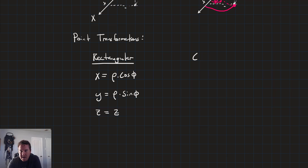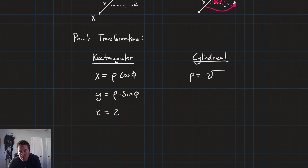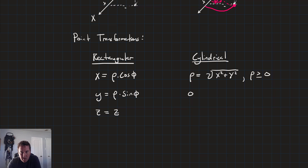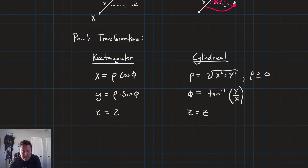On the cylindrical side: rho = sqrt(x² + y²) — remember that rho, being a radius, must be greater than or equal to zero. Theta = arctan(y/x), and z is just equal to z.